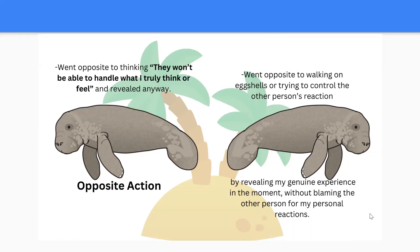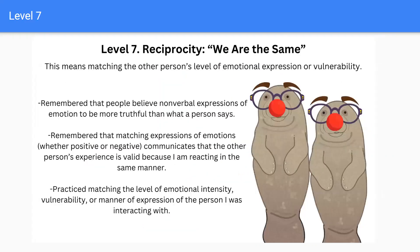Went opposite to walking on eggshells or trying to control the other person's reaction by revealing genuine experience in the moment without blaming the other person for personal reactions. Level 7: Reciprocity — 'We are the same.' This means matching the other person's level of emotional expression or vulnerability. People believe nonverbal expressions of emotion to be more truthful than what a person says. Matching expressions of emotion, whether positive or negative, communicates that the other person's experience is valid because you are reacting in the same manner. Practice matching the level of emotional intensity, vulnerability, or manner of expression of the person you are interacting with.